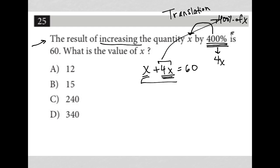So then of course, x plus 4x is 5x. So we get 5x is equal to 60. I can divide both sides by 5 and get x is equal to 12.